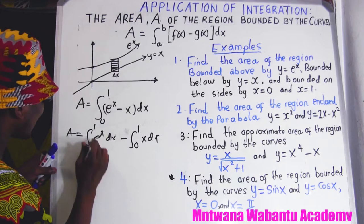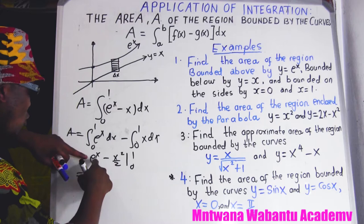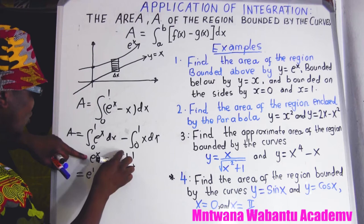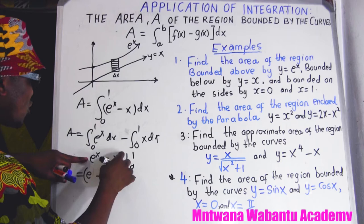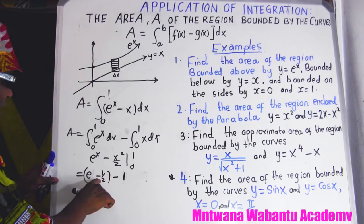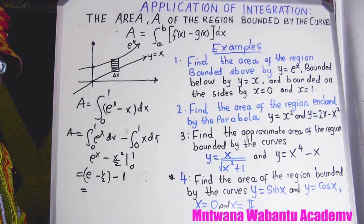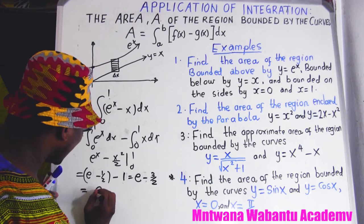So area equals the integral from zero to one of eˣ dx minus the integral from zero to one of x dx. When you integrate eˣ you get eˣ, and when you integrate x you get x squared over two. Applying limits: upper limit gives e to the one minus one squared over two, which is one half. Lower limit gives e to the zero minus zero, which is one minus zero.